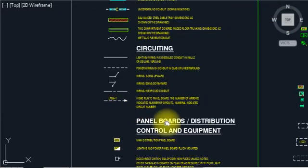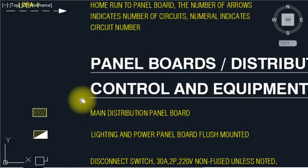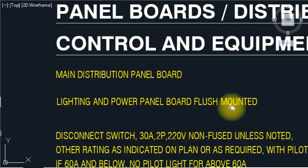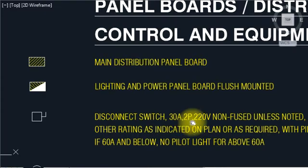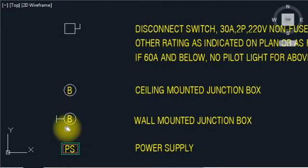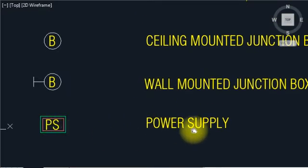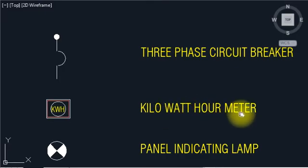Now starting with panel boards: distribution control and equipment. This is the main distribution panel board. This is a lighting and power panel board, flush mounted — watch out if it is located. Disconnect switch 30A to P20, all not fused unless noted. This is a ceiling mounted junction box. This is a wall mounted junction box. This is power supply three-phase circuit breaker.